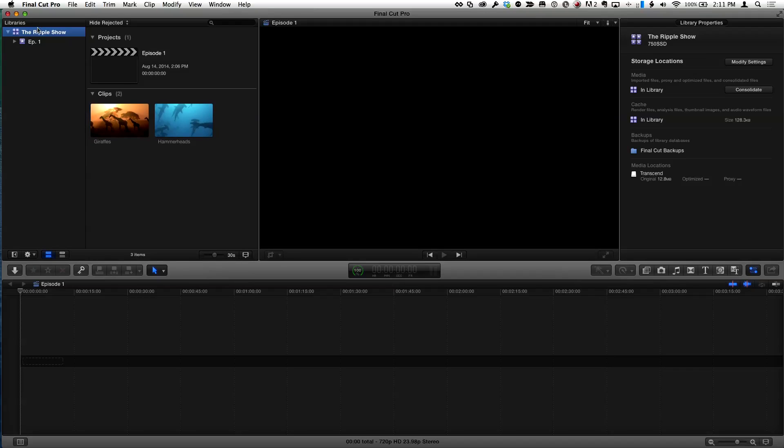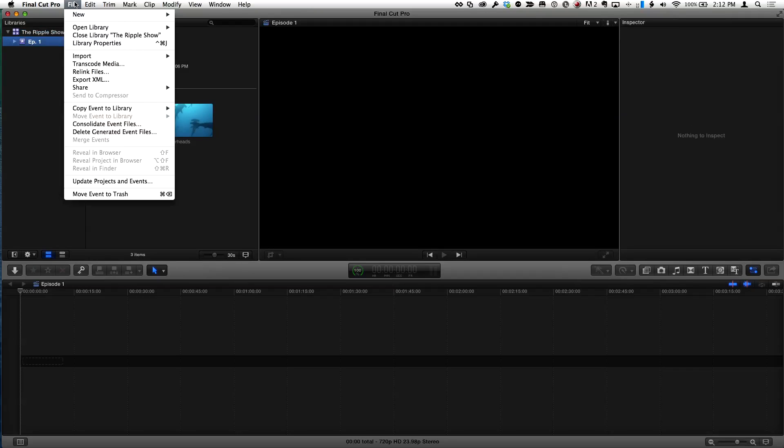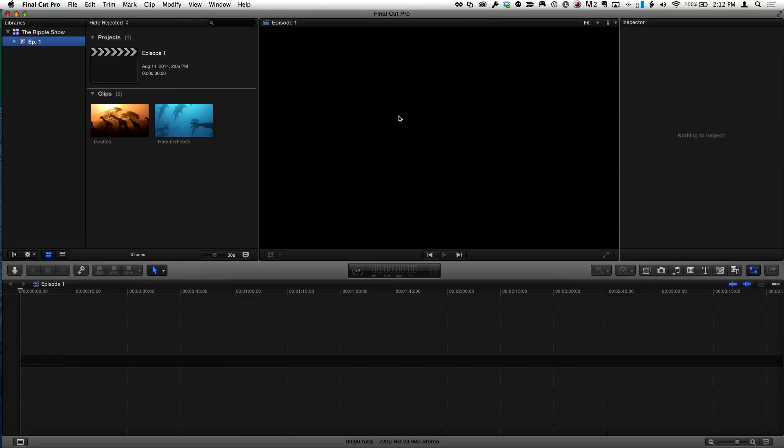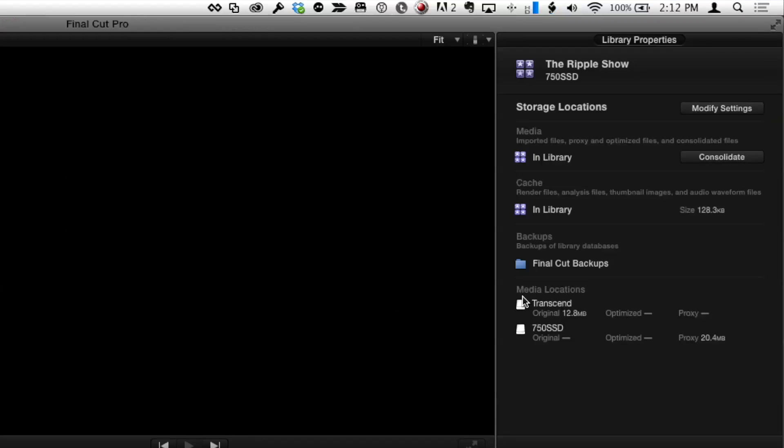In this case I'll choose in library and say okay. Then with the event selected I'll choose file, transcode media, and select create proxy media. I'll click okay and now it's going through and making copies. Now if I go back and select the library and return to the library inspector, we can see in our media locations that my original media is on that external Transcend drive, but my proxy media is right here on my internal drive.